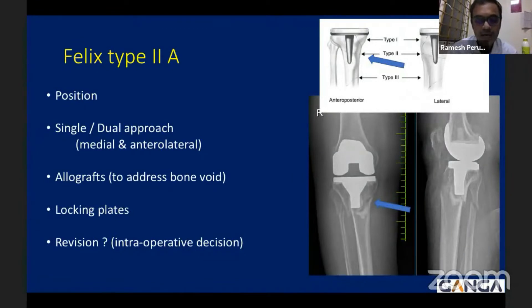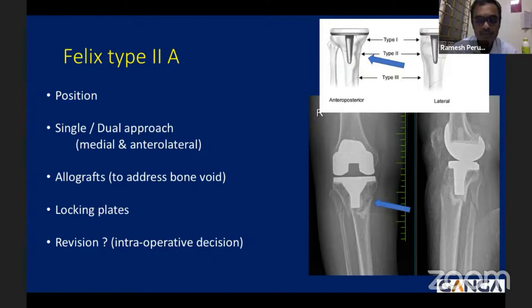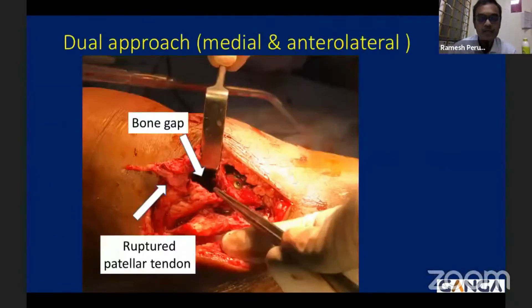For this type, we have to consider the approach. Since most of the time we can only achieve unicortical screws, we always prefer to use plates on both sides — both the medial and anterolateral approaches. Because of osteoporosis and sometimes a broken cement mantle, we may need to avoid certain fixation strategies. Therefore, you need to prepare for an allograft to fill any void, and locking plates have revolutionized treatment — even unicortical screws can be locked with the plates. You should also be prepared for prosthesis loosening and the possibility of revising the implant.